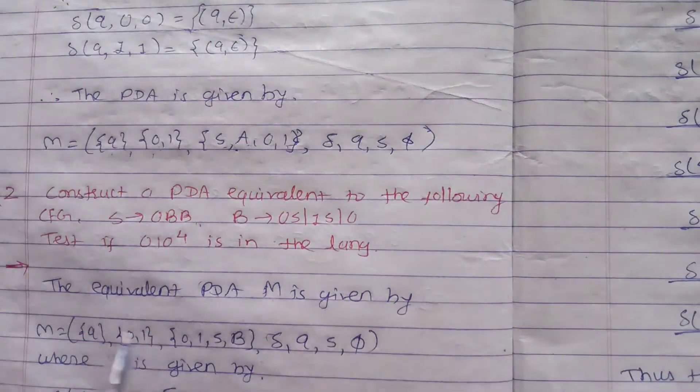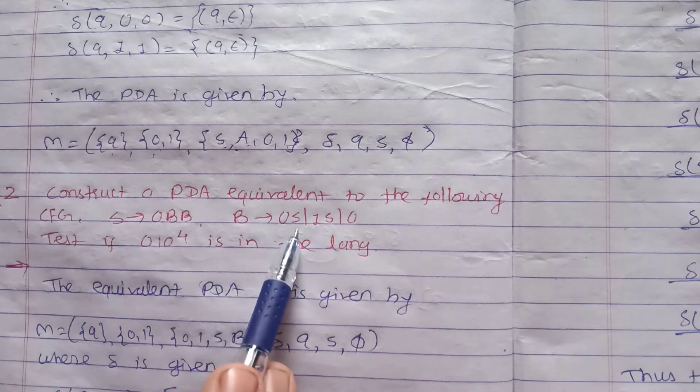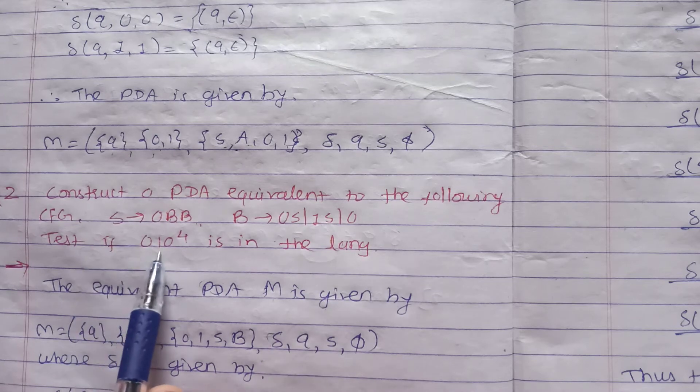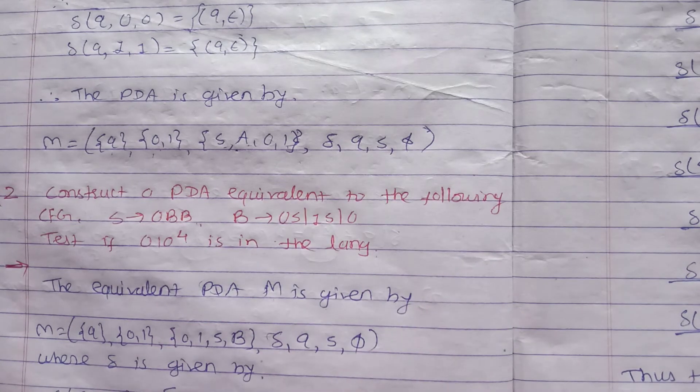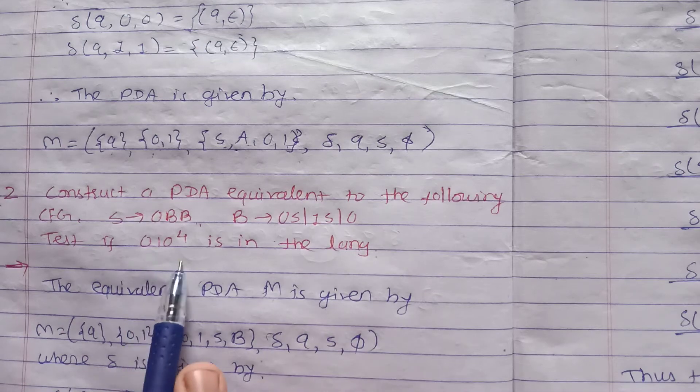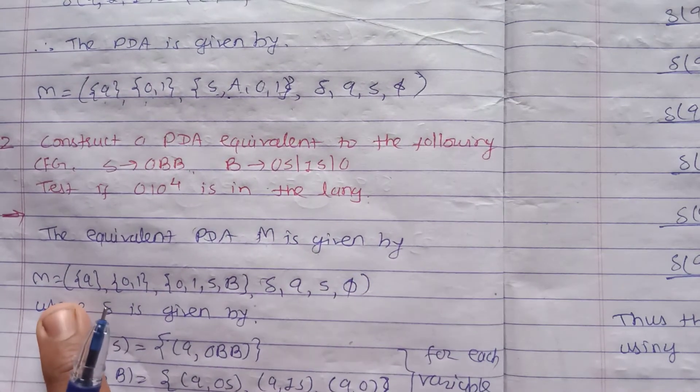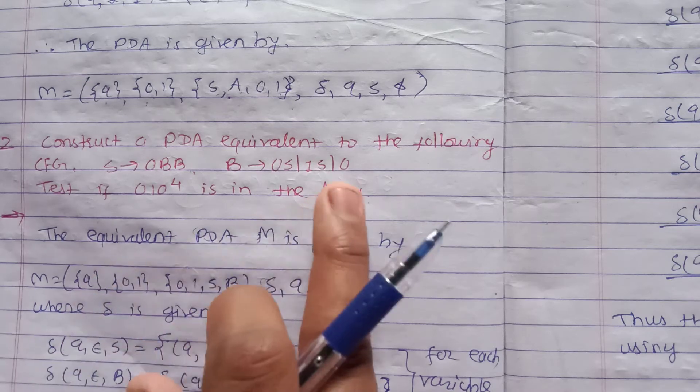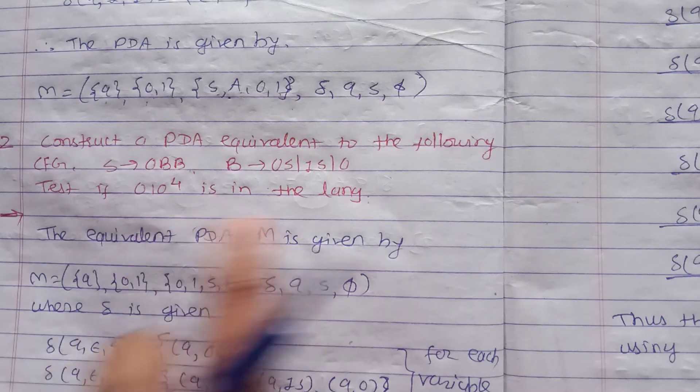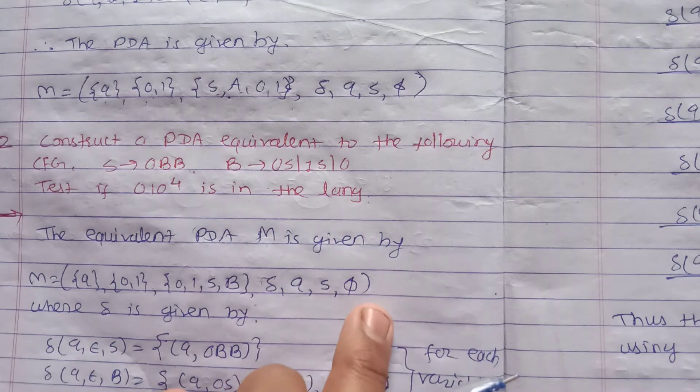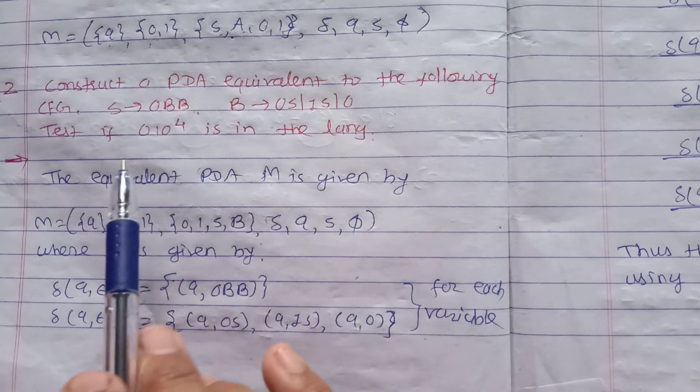Next example: construct a PDA equivalent to the following CFG: S produces 0BB, B produces 0S or 1S or 0. Test if 0,1,0 to power 4 is in the language. The equivalent PDA M is given by M equals (Q, {0,1}, {0,1,S,B}, δ, q, S, φ), where Γ is variable union terminal.